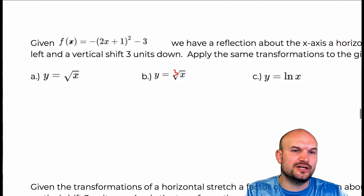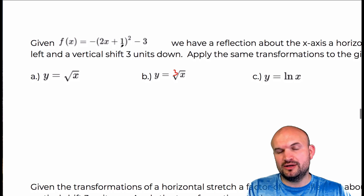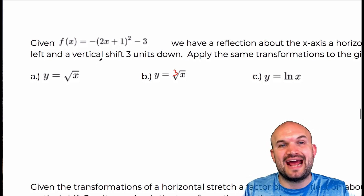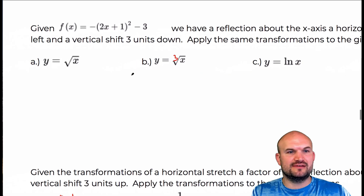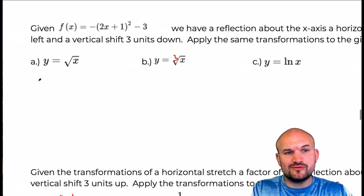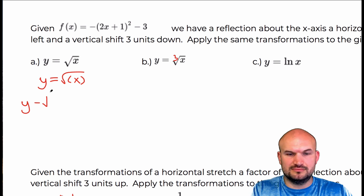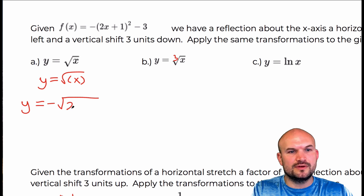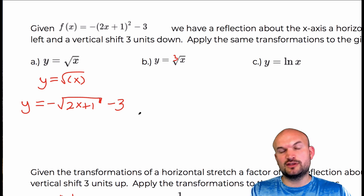On the next set, we're multiplying by a negative. Inside the function we have two x plus one, which is a horizontal shift of one-half unit to the left. The inside of the square root function is what's under the radical. So it would be y equals negative square root of (two x plus one), and then minus three on the outside, so we know the three is outside the radical.